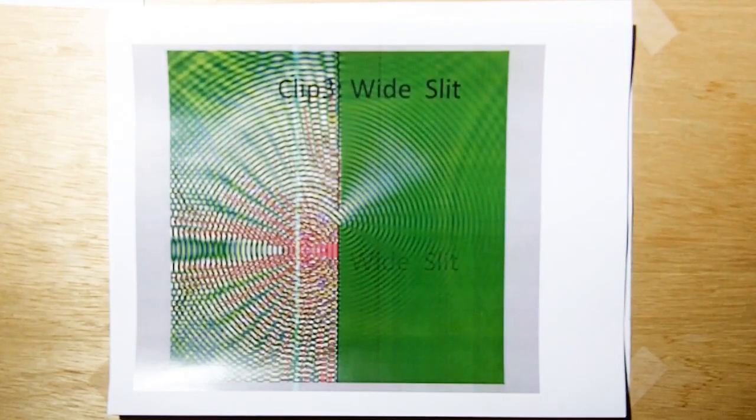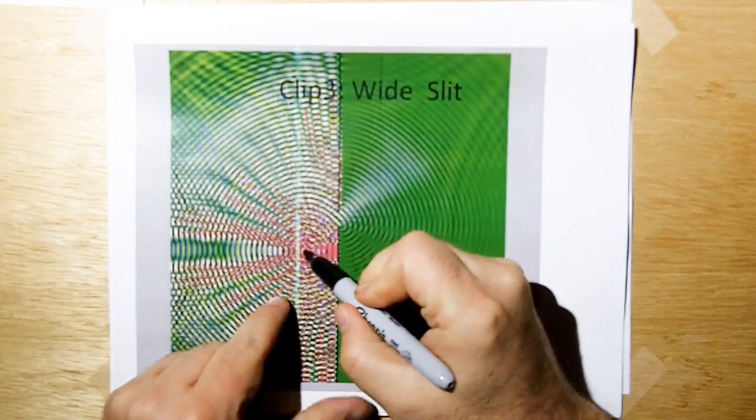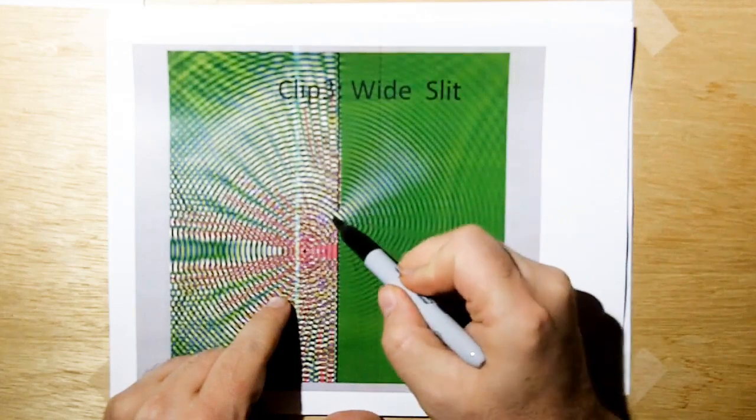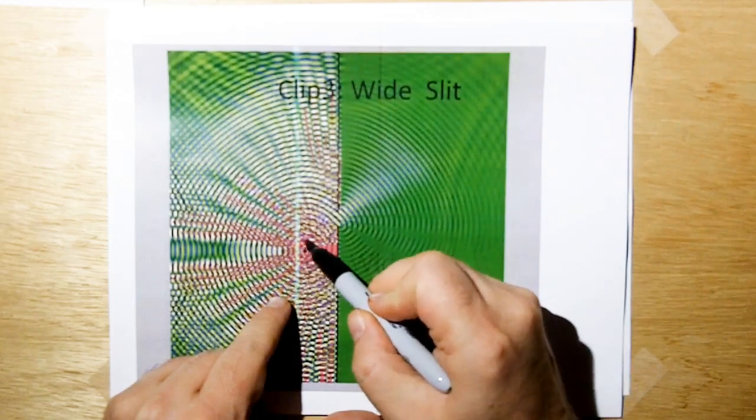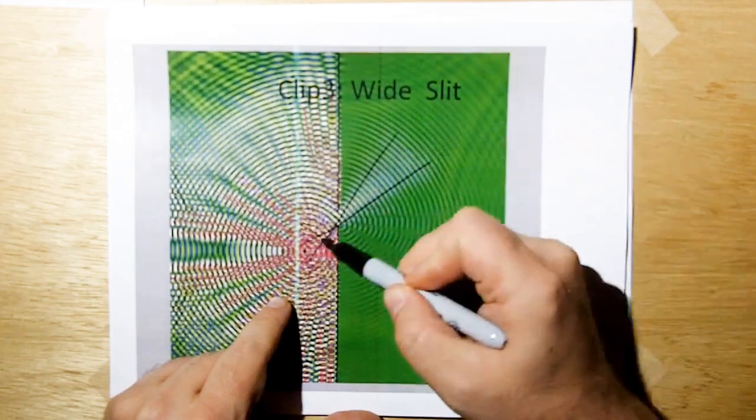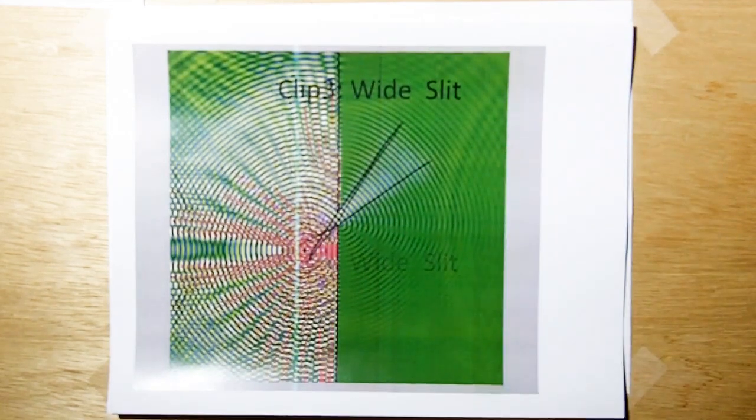This is a wide slit. Here we have the source over here and we have a wider slit which should make a difference. I didn't do it right and that's exactly what we're seeing.